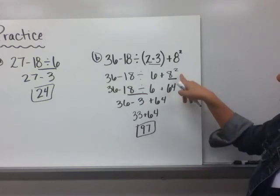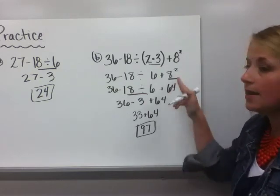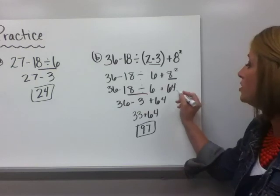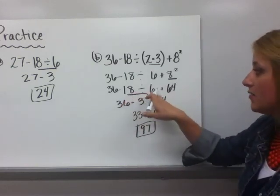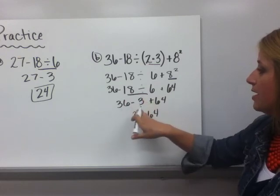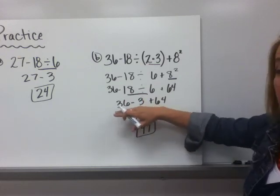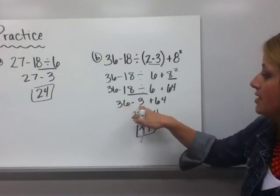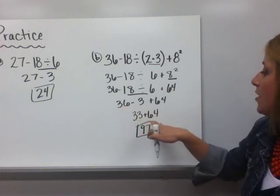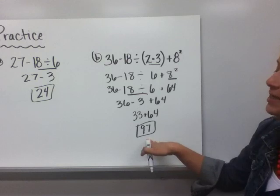Next, I'm going to go with exponents. 8 squared, not 16. It's not 8 times 2. Remember, it's 8 times 8, which is 64. Next, my division. 18 divided by 6 is 3. Bring down the rest of it. I'm going to subtract first because I'm going left to right with that step. 36 minus 3 is 33. And then 33 plus 64 is 97.